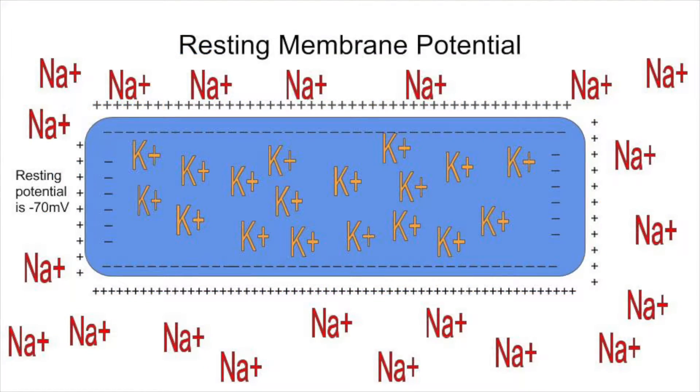In resting nerve cells, the inside of the cell is negatively charged compared to the outside of the cell. The outside of the cell has a higher concentration of sodium, while the inside of the cell has a higher concentration of potassium. Therefore, the resting membrane potential is about negative 70 millivolts.